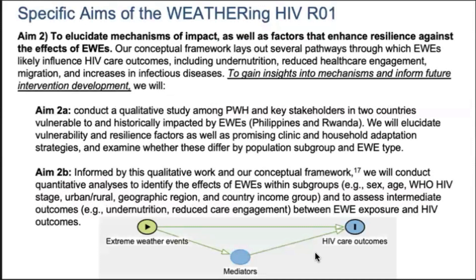The second aim is about trying to elucidate mechanisms of potential impact of extreme weather events, as well as the things that enhance resilience against their effects. This is the mixed methods part of our R01. Under Sherry's leadership, we'll be conducting qualitative studies in the Philippines and in Rwanda, talking to patients with HIV as well as providers to understand the level of vulnerability and how they've coped with and adapted to extreme weather events. Informed by that information, we will do more quantitative work to understand the extent to which mediators and moderators are operating in these causal associations.